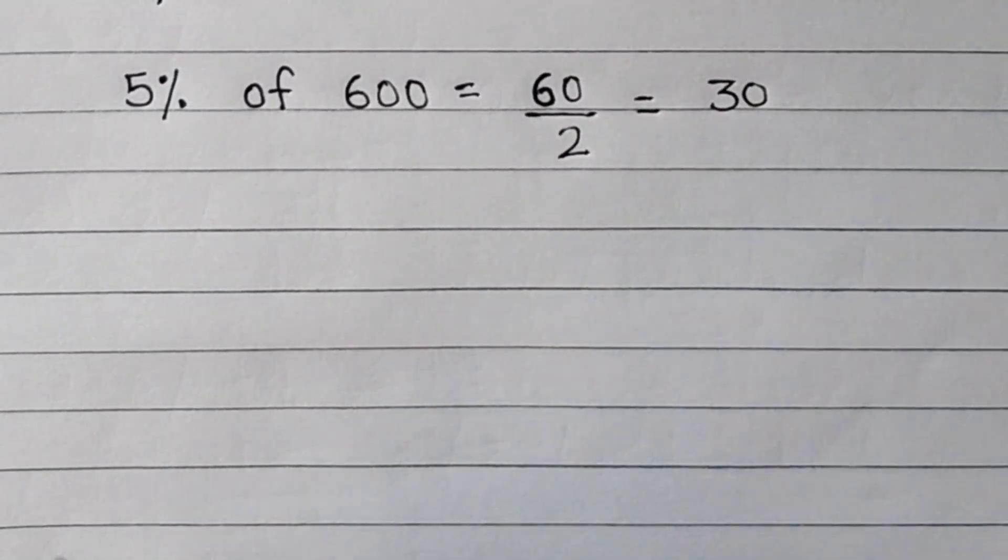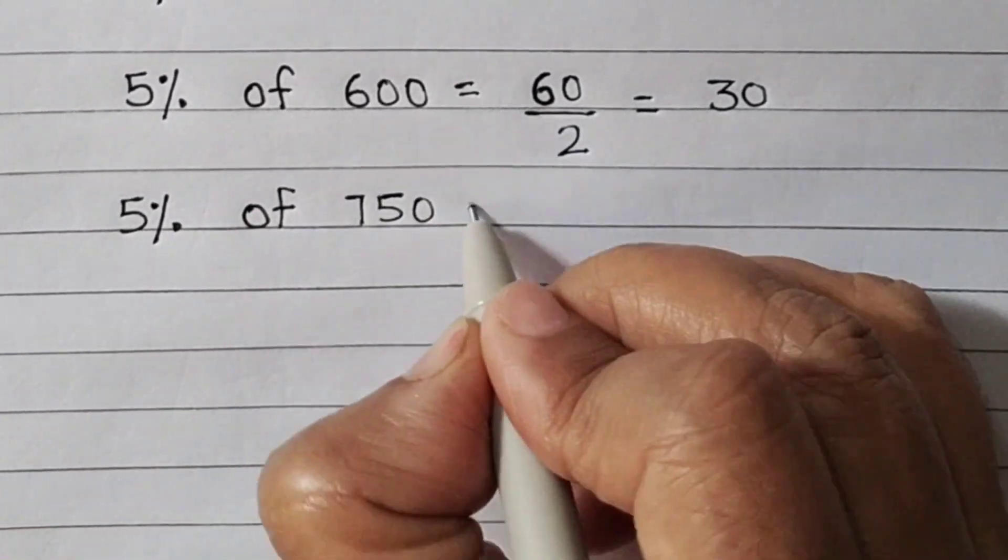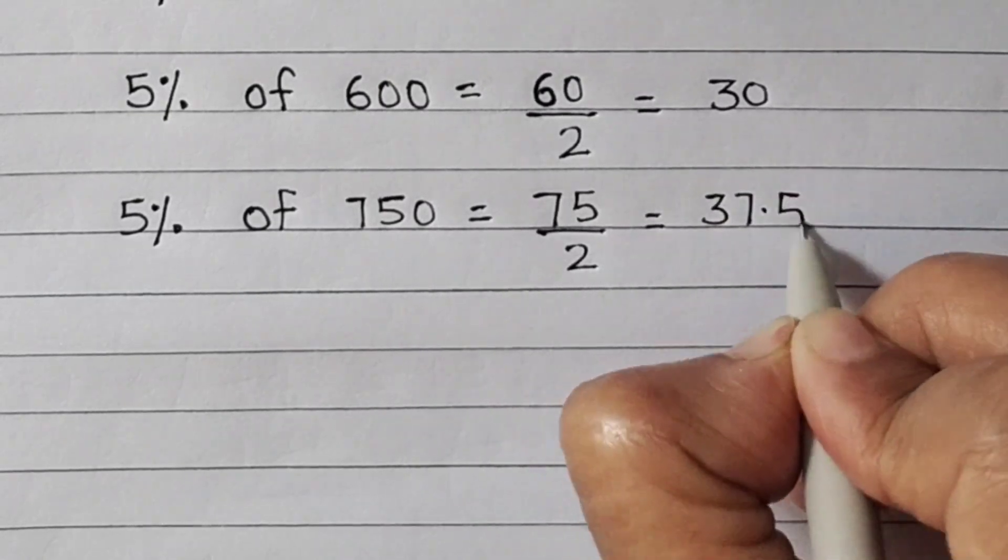60 divided by 2 is 30. So 5% of 750. 10% was 75 divided by 2. It will be 37.5.